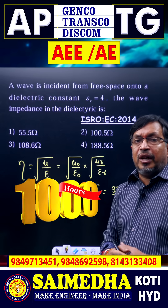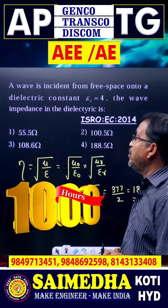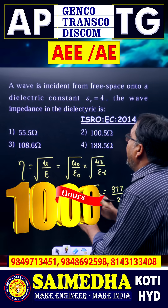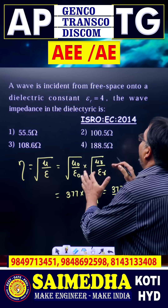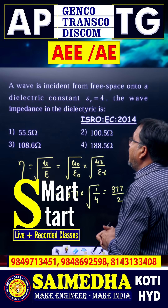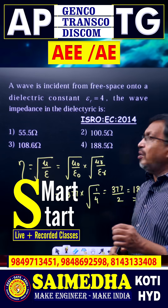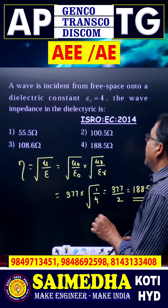Students, this is also an electromagnetic waves previous CISRO question. A wave is incident from free space onto a dielectric with epsilon r equal to 4.